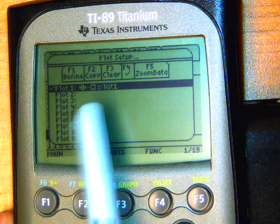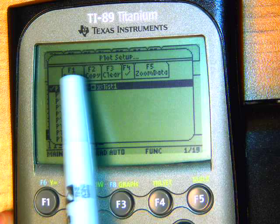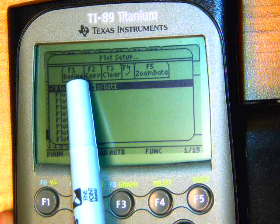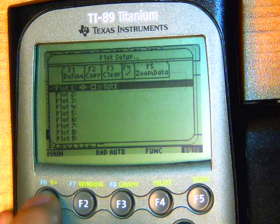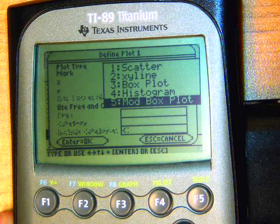Now I have mine already set up here. You probably will not see this exactly here. What we need to do is go into F1 under define. Under this drop down menu, choose the modified box plot.